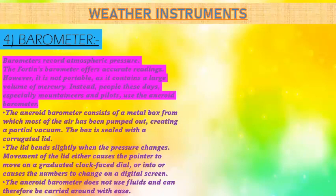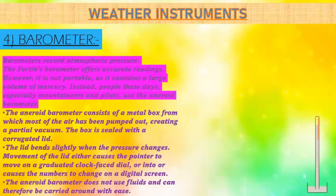Now let's revisit the barometer with proper steps. Barometers have the task of recording atmospheric pressure. The mercury barometer offers accurate readings; however, it is not portable as it contains a large volume of mercury. Instead, people these days — especially mountaineers and pilots — use the aneroid barometer. The aneroid barometer consists of a metal box from which most of the air has been pumped out, creating a partial vacuum. The box is sealed with a corrugated lid that bends slightly when the pressure changes.